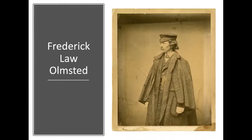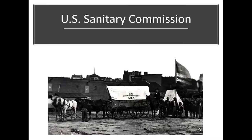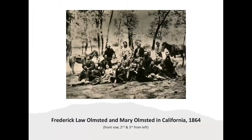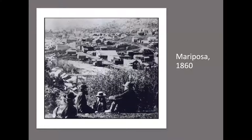In 1861, Olmsted is appointed general secretary of the U.S. Sanitary Commission, a Civil War-era national medical relief effort securing aid and supplies for wounded soldiers. After resigning from the Sanitary Commission, Olmsted is appointed commissioner of the Yosemite and Mariposa mining estates and moves his entire family to the Sierra Nevada. There he manages a gold mine in a roughneck mining town, and while there is appointed to a California state commission, playing a leadership role in writing the first report proposing the permanent protection of Yosemite Valley.